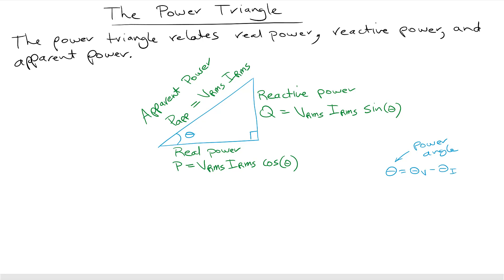It's a right triangle with the apparent power on the hypotenuse, and we have phase angle theta here — that is the power angle from the previous lecture, which is the phase angle of the voltage minus the phase angle of the current waveforms. On the horizontal axis we have real power, and on the vertical axis we have reactive power.